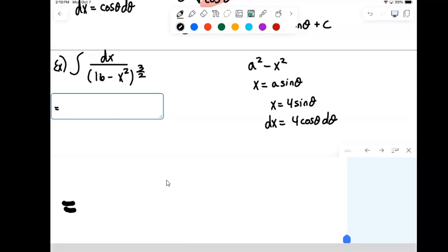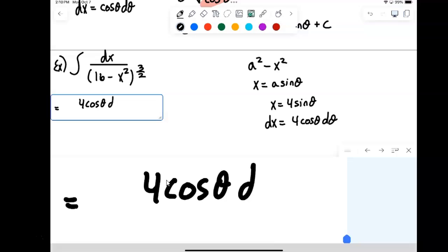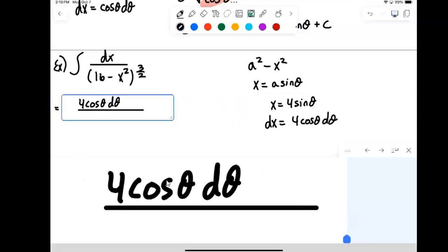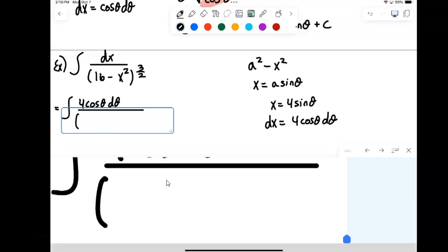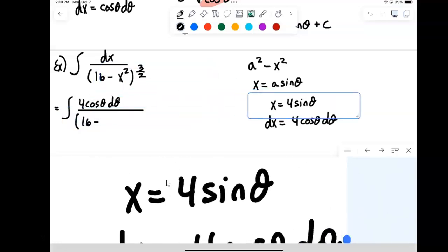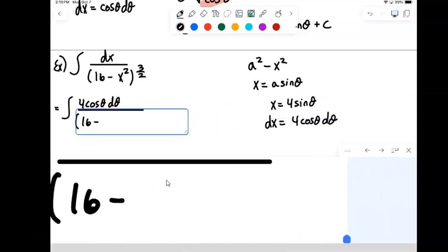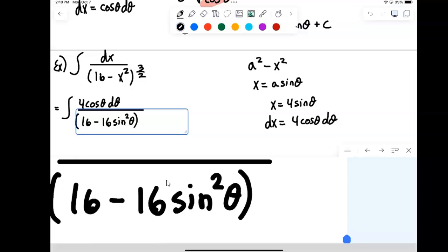So making these changes, we'll have on top 4 cosine theta d theta inside of our integral. And then we're going to have 16 minus x squared. x is 4 sine of theta.